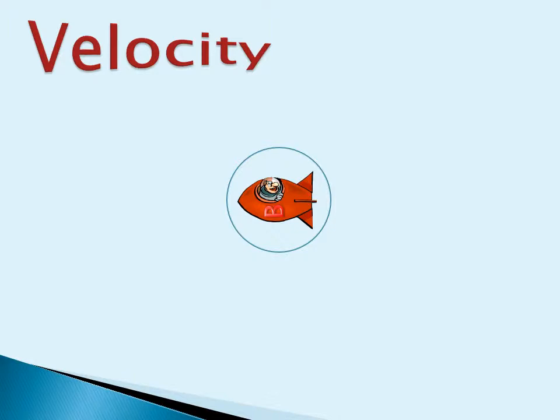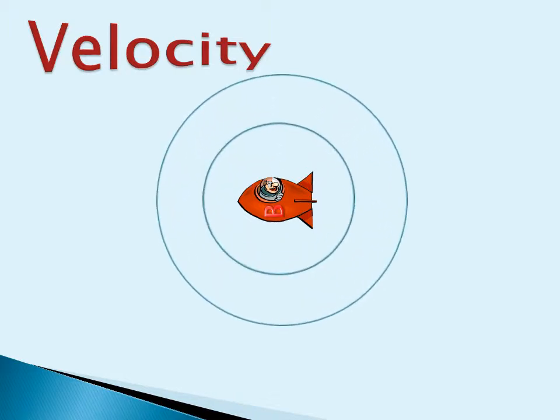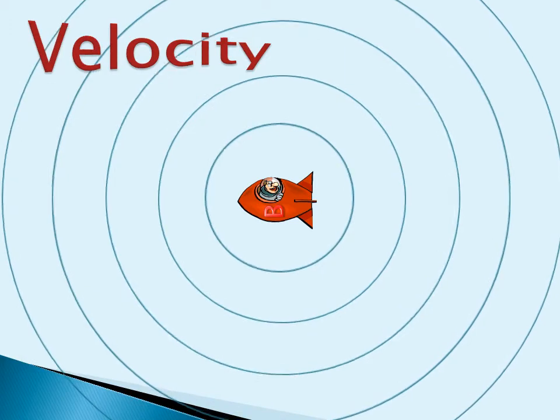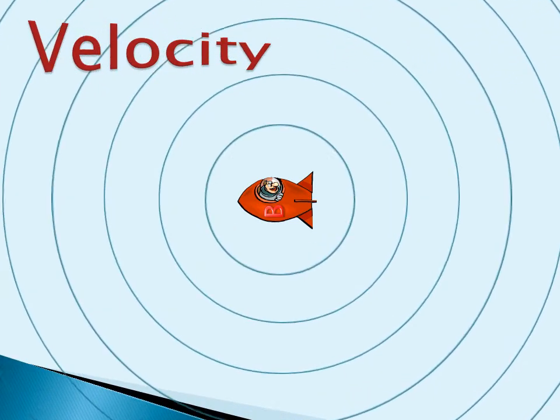Any light leaving Bob's ship will propagate away in waves like ripples on a pond. Whether Bob is in motion or not, this is how Bob could think of light leaving his ship.